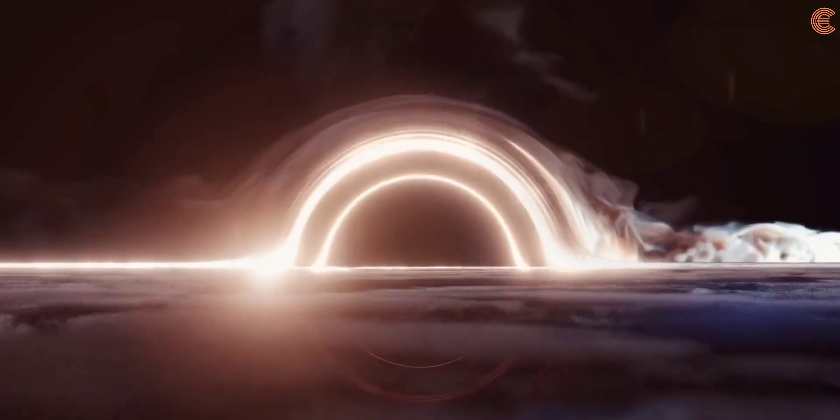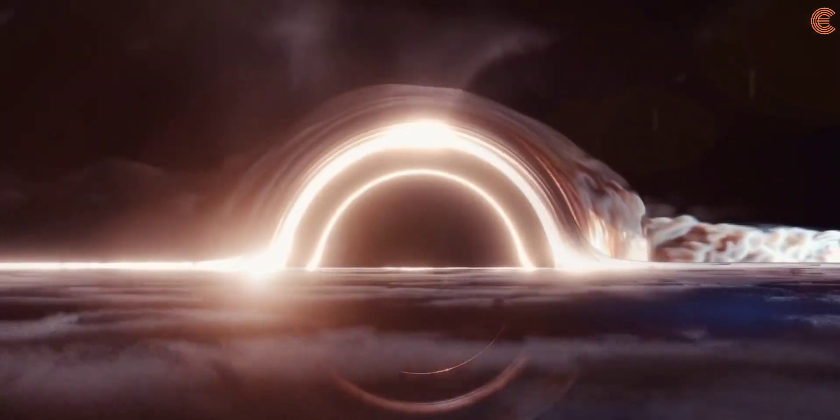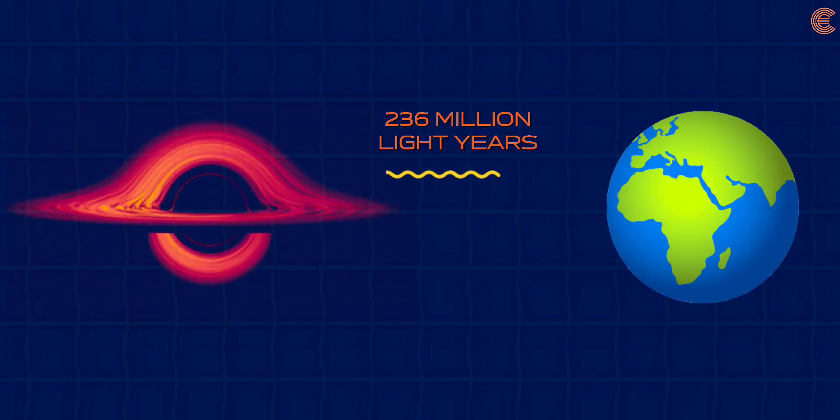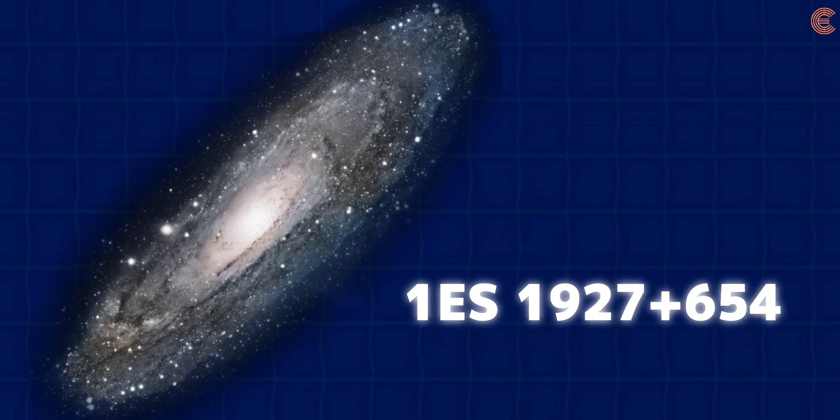NASA scientists may have caught a supermassive black hole flipping its entire magnetic field. The black hole is located 236 million light-years away in the galaxy known as 1ES 1927 plus 654.